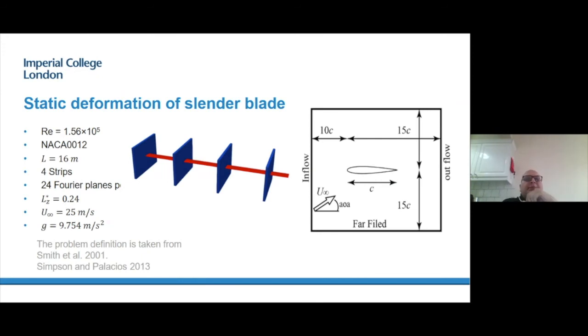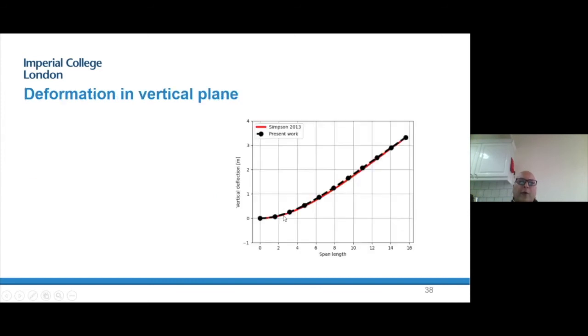Just one example from my simulations. This is a HALE wing, high altitude long endurance wing, with Reynolds number 150,000. The length of the wing is 16 meters. For this simulation, I used four strips and 24 planes in each strip. You can see here, this is the angle of attack, the angle that the velocity vector incident the airfoil. At the start of the simulation, this angle of attack is 4 for each of the strips.